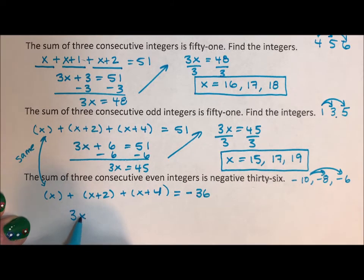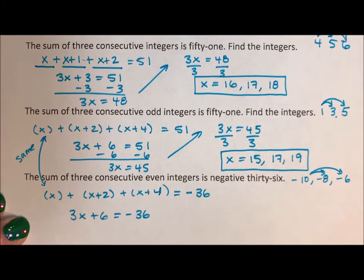What it adds up to. Three x plus six. Even that is exactly the same. Again, what's different is what my consecutive even or consecutive odd integers add up to. That's what's going to change my solution. Not the setup, but what they add up to. I subtract six.